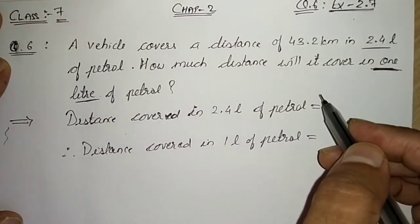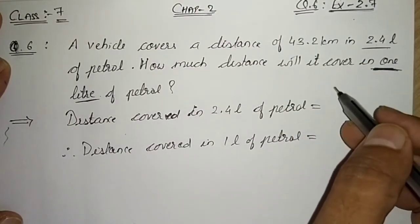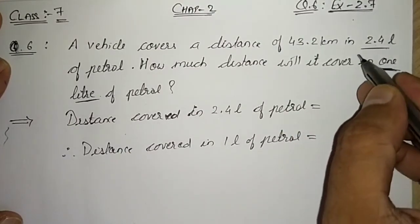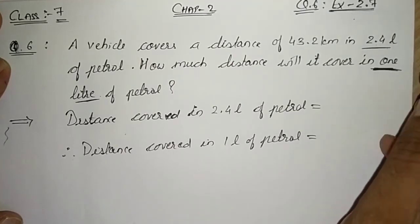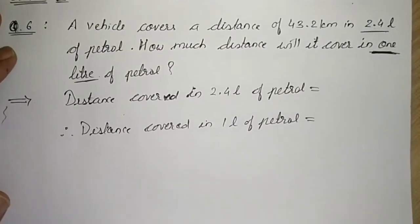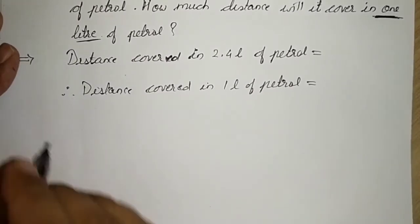Over there it was one liter of petrol and we had to find 10 liters of petrol, so maximum value in that question we had to find, so we multiplied. Here we will divide.